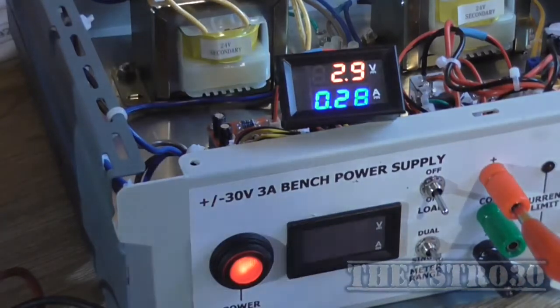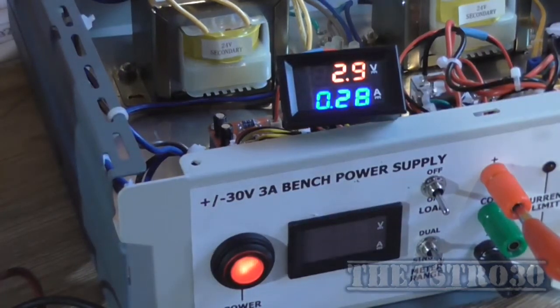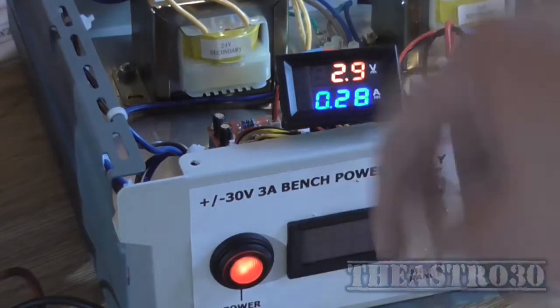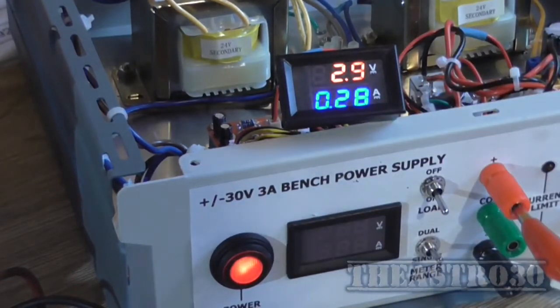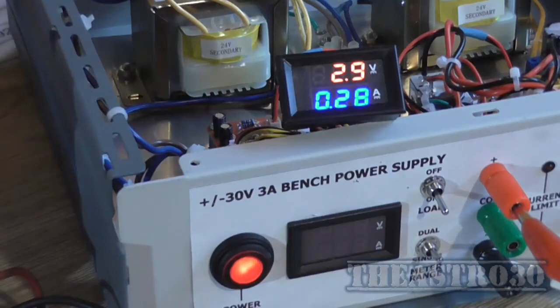Now, two possibilities. It could have been when I unsoldered the shunt at the back of it there, I may have put too much heat in it and changed the resistance. Or when I actually hooked the 9V battery up to it across the sense wires, there's like 6A going into it. It could have heated the wire up and caused it to also change its resistance.